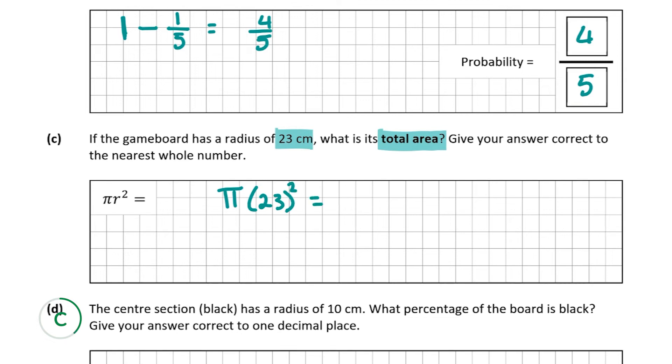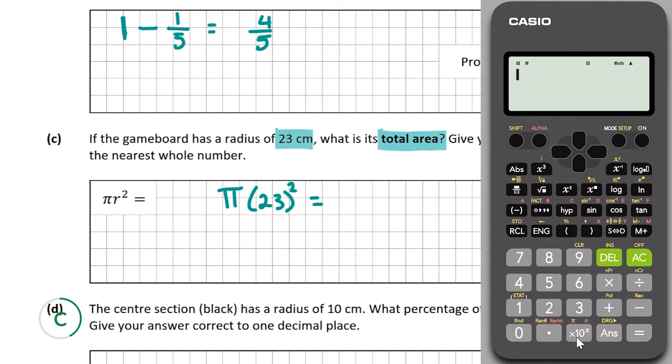On a Casio to get the π sign, you're going to press shift and then press the bottom button which is multiplied by 10 to the power of x to get π. Then use your bracket, 23, close the bracket, squared.